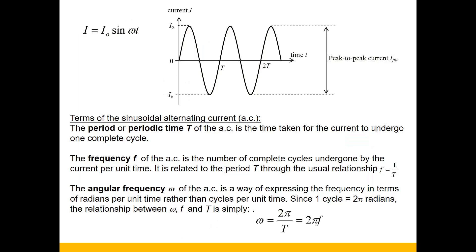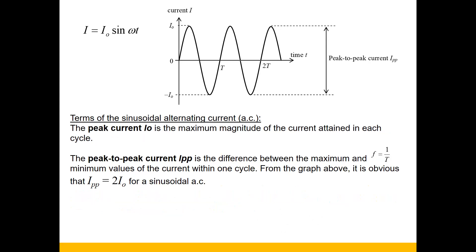Other terms in AC: frequency is one over period. Angular frequency — omega — is angular frequency. Some students write 'angular velocity' — that's not correct. Angular velocity belongs only to circular motion. From simple harmonic motion onwards, we are talking about angular frequency. Please express this correctly. Peak current I₀ is also important — the peak value of a current is called the peak current, and the peak-to-peak current is twice that.